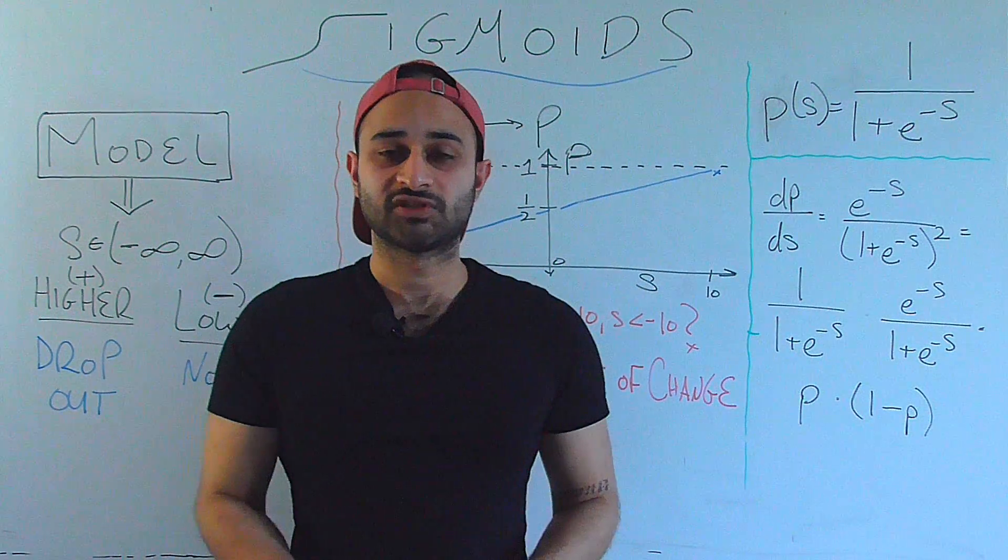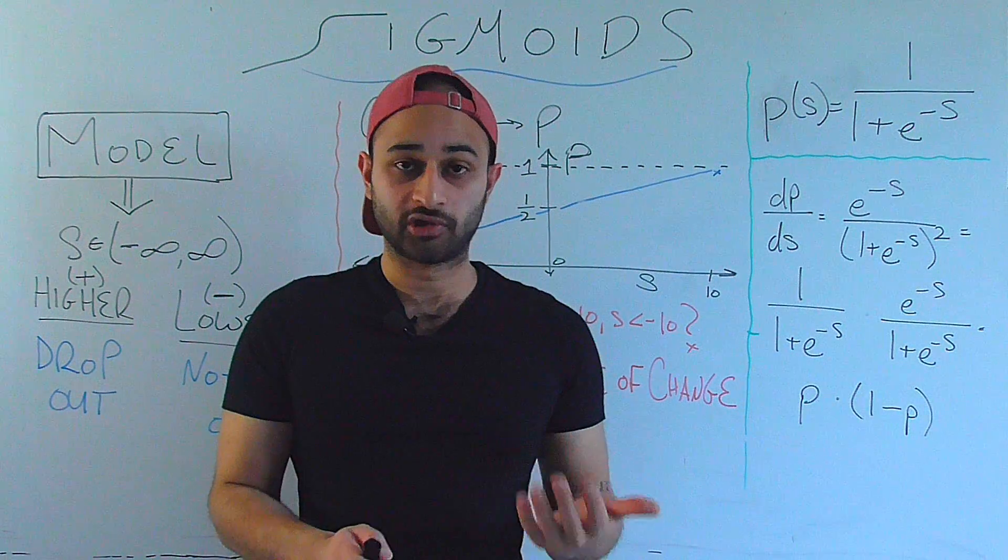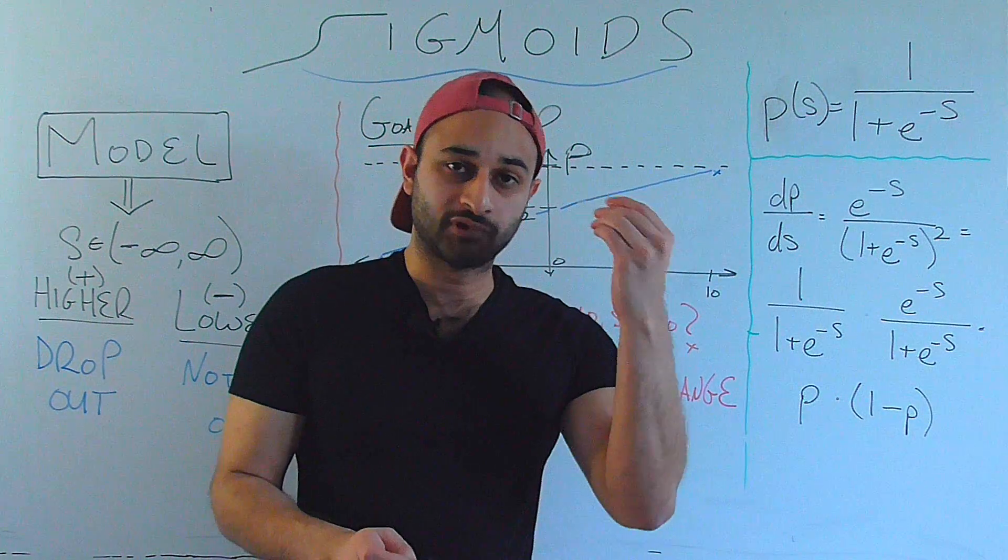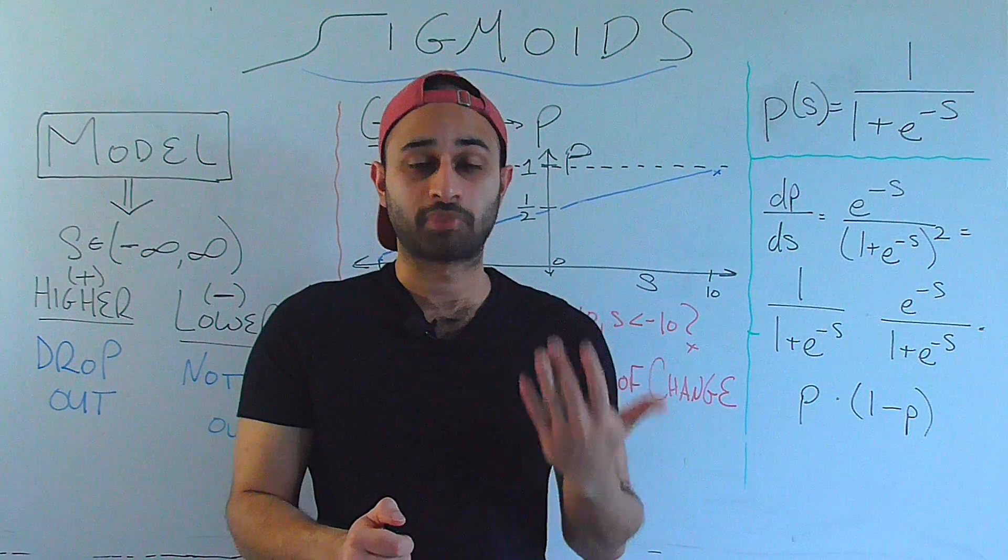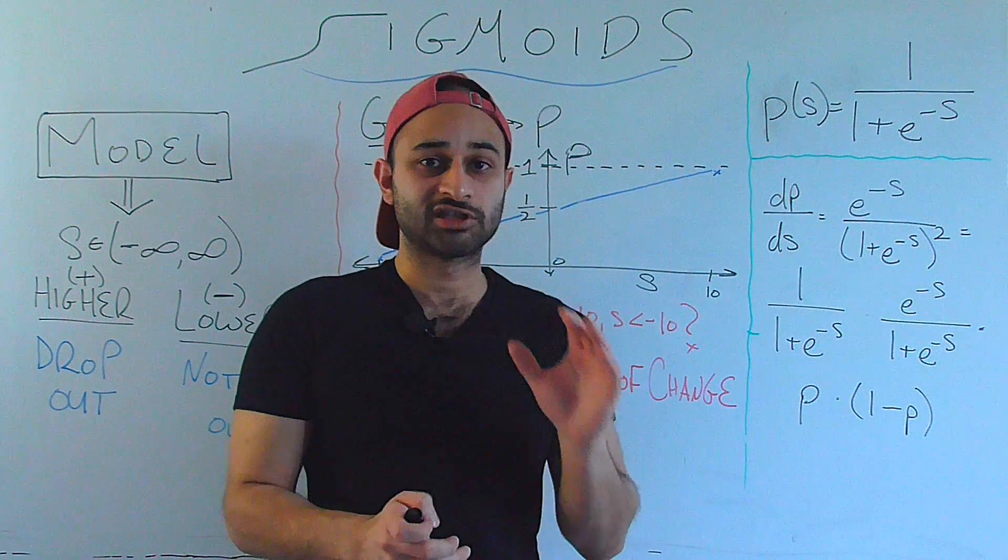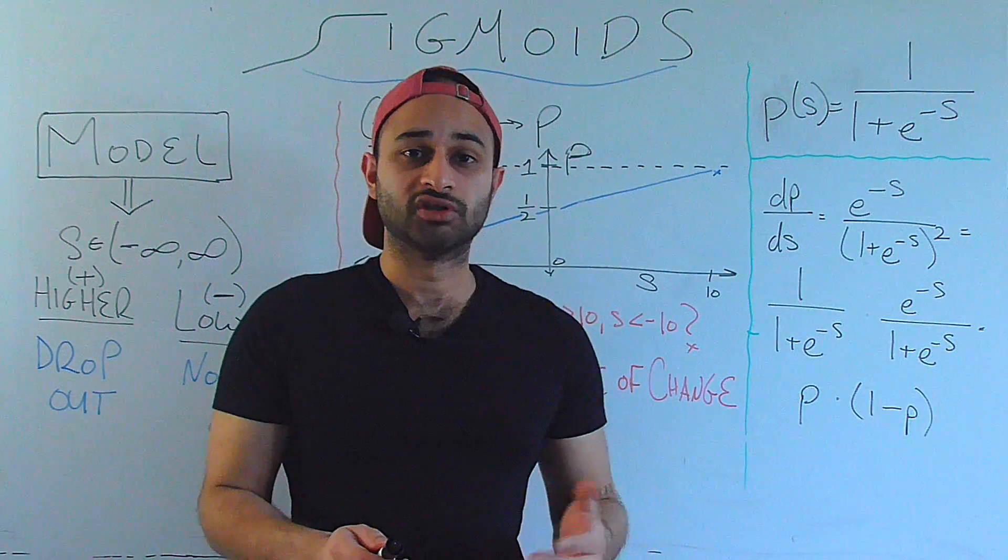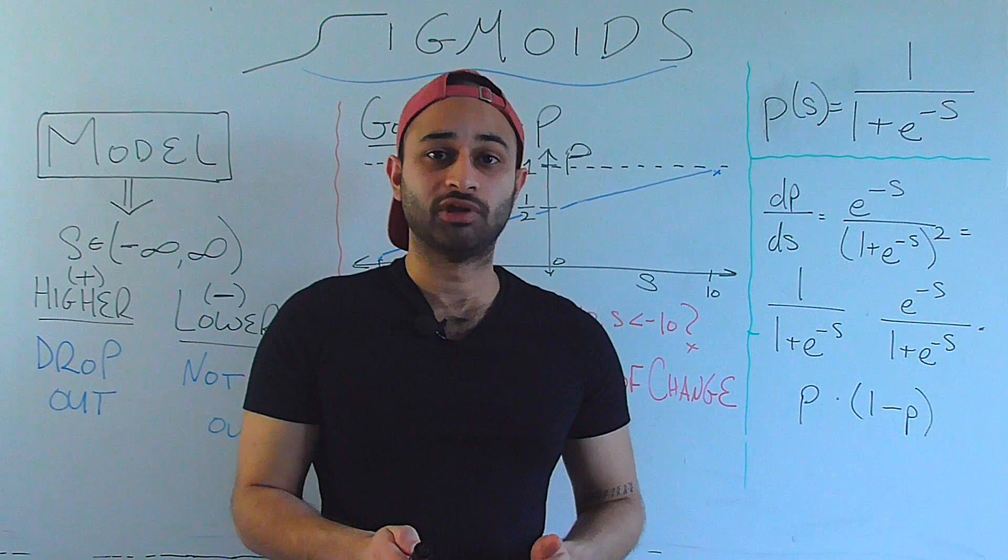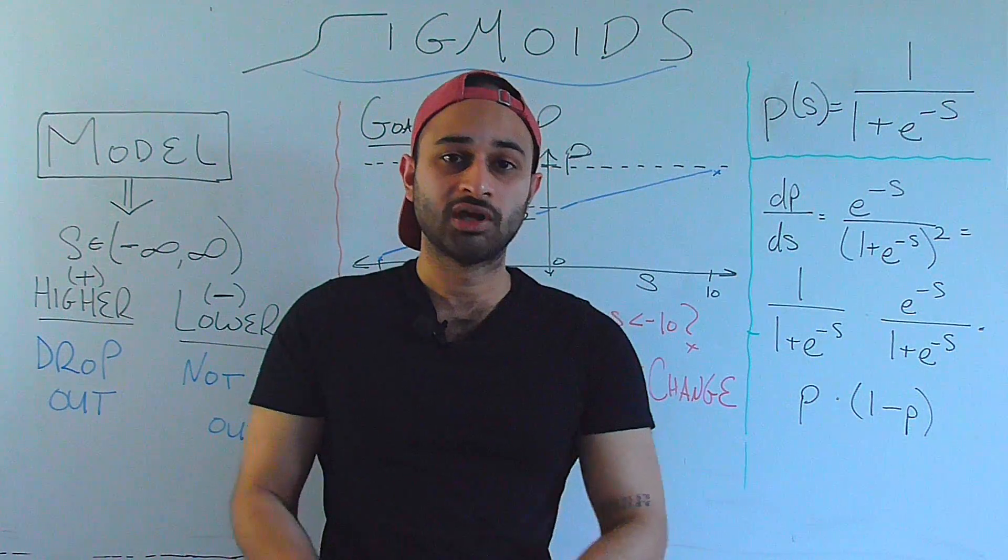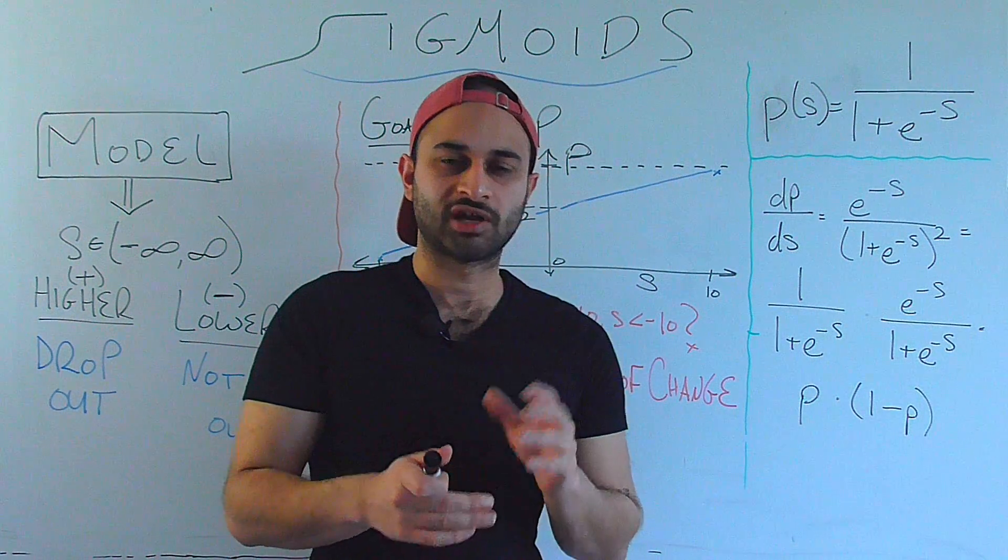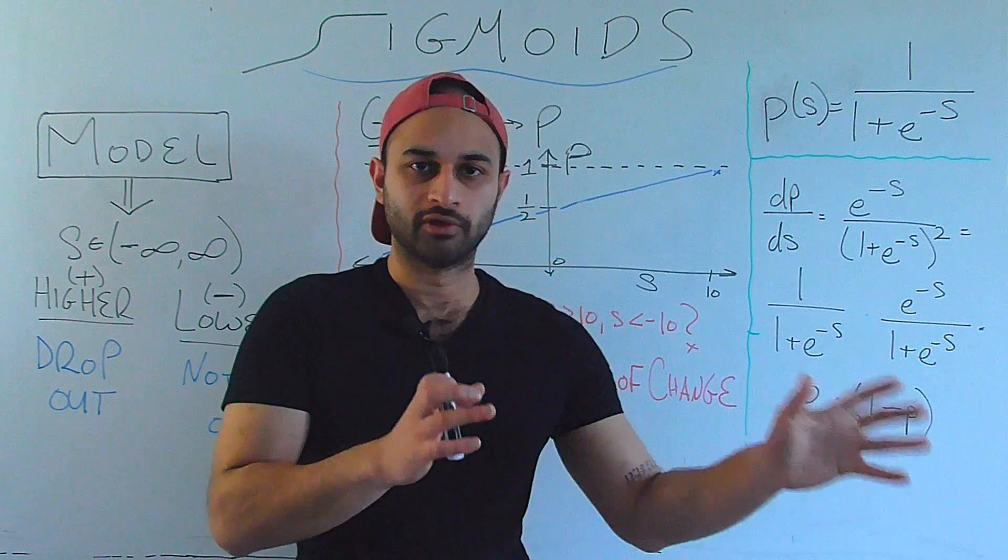The reason we want to do this is mostly because of interpretability, because now we can say, given that the model outputs this score, we can map that to a probability, and that'll tell us what's the probability or the likelihood that this student will drop out. So if that likelihood is very high, like 95%, then we can send many resources to that student to hopefully help them not drop out. If that probability is more like 2%, maybe we don't need to worry so much about those students.